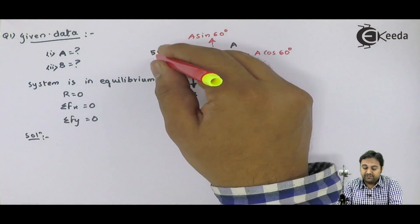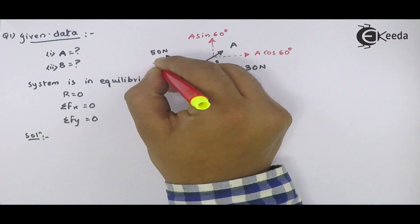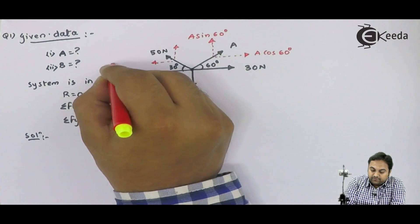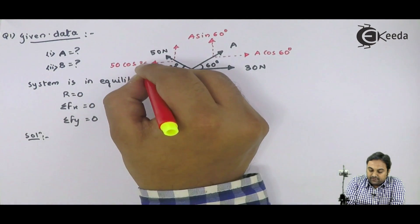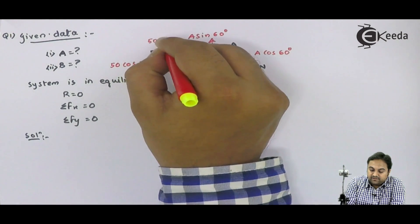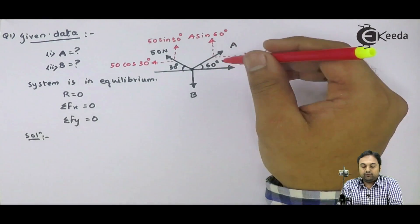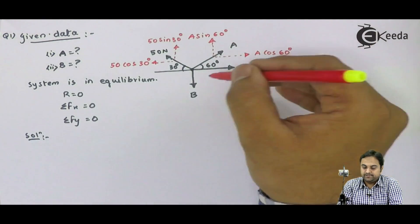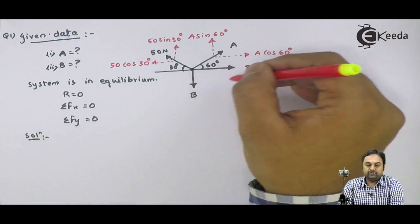Next, 50 Newton is inclined at 30 degree with horizontal. So your horizontal component will be 50 cos 30 degree. Vertical component will be 50 sin 30 degree. Now, if we see force 30 Newton, it is a horizontal force, and force B is a purely vertical force. So no need to resolve them.